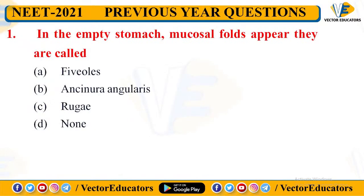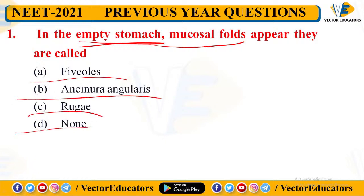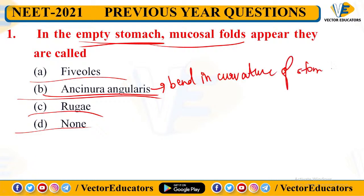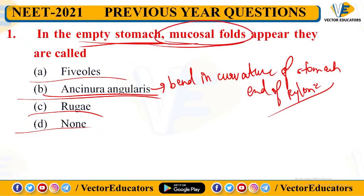Our first question: in the empty stomach, mucosal folds appear — they are called what? So when we are fasting and our stomach is empty, a mucosal fold appears. The options are: foveals, angularis, rugae, or none. Incisura angularis is a bend — a curvature at the end of the pyloric end of the stomach. But the mucosal fold is called rugae, also known as gastric fold.